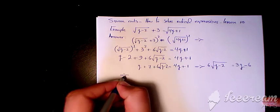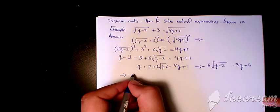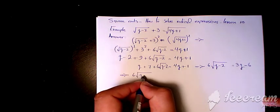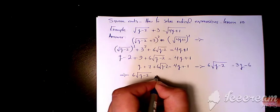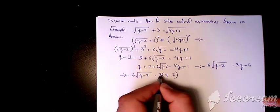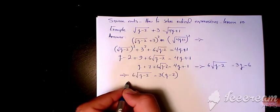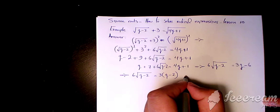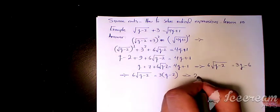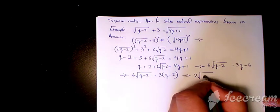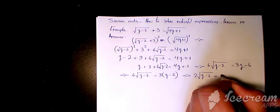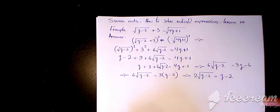Then we can say: 6 times root of (q minus 2) equals 3q minus 2, and then the 3 and 6 cancel out — a factor of 2 remains — so we have 2 times root of (q minus 2) equals q minus 2.